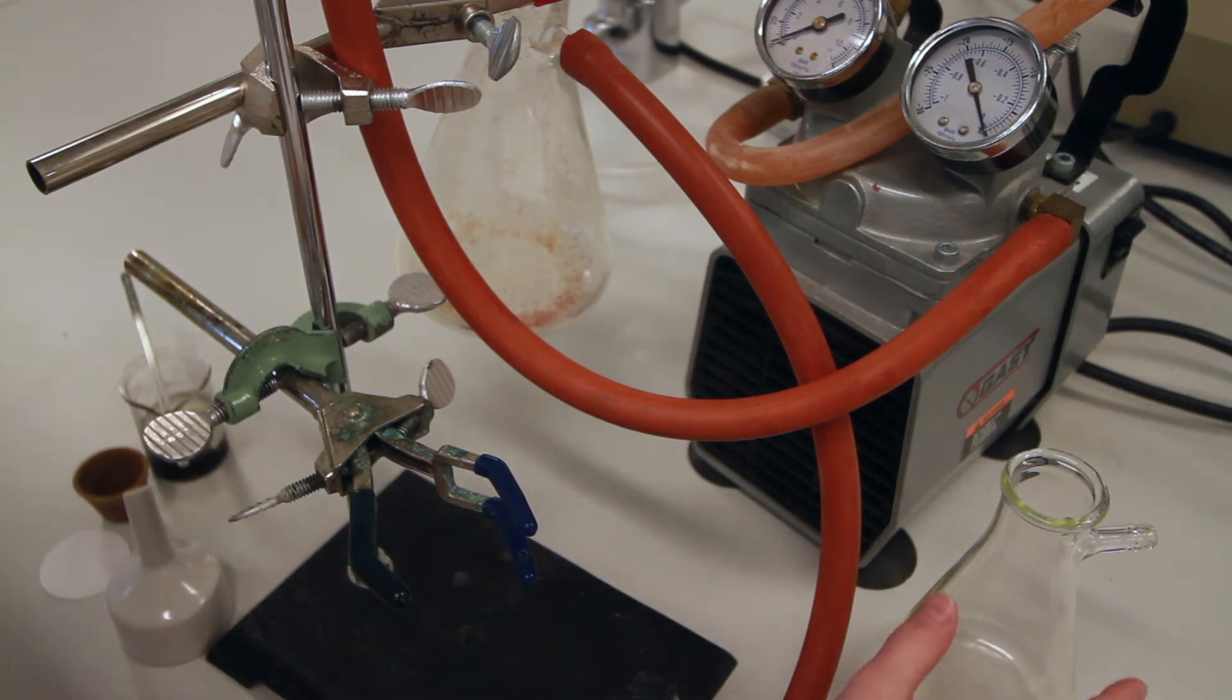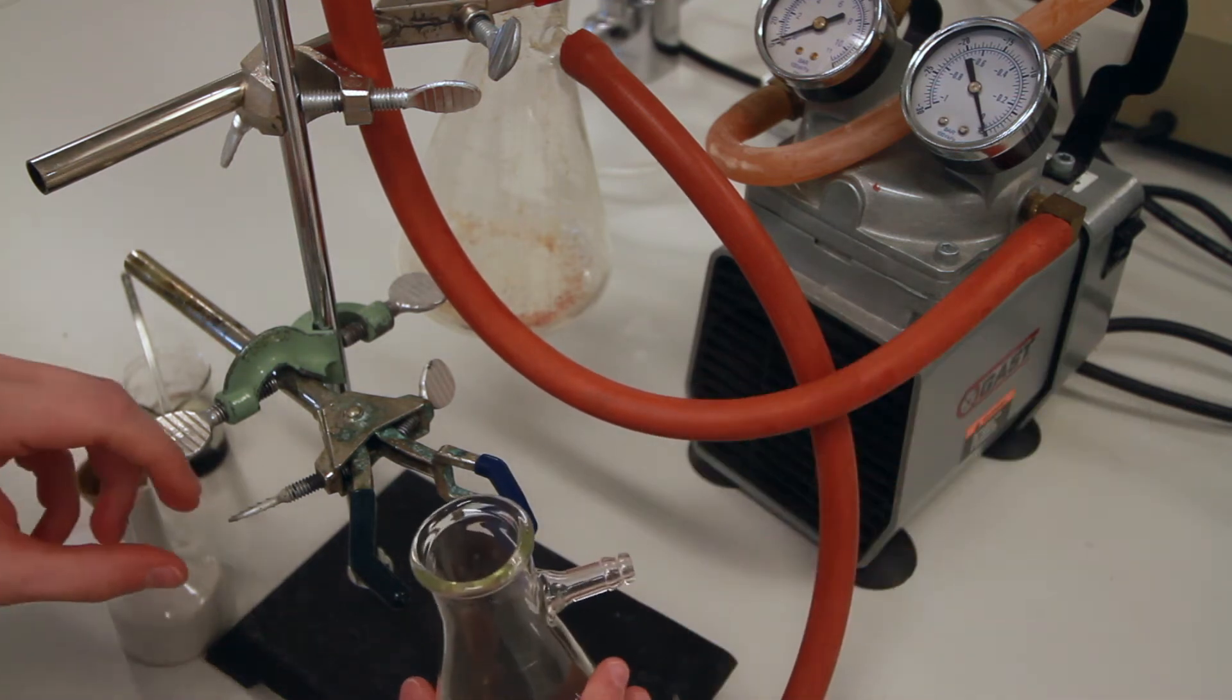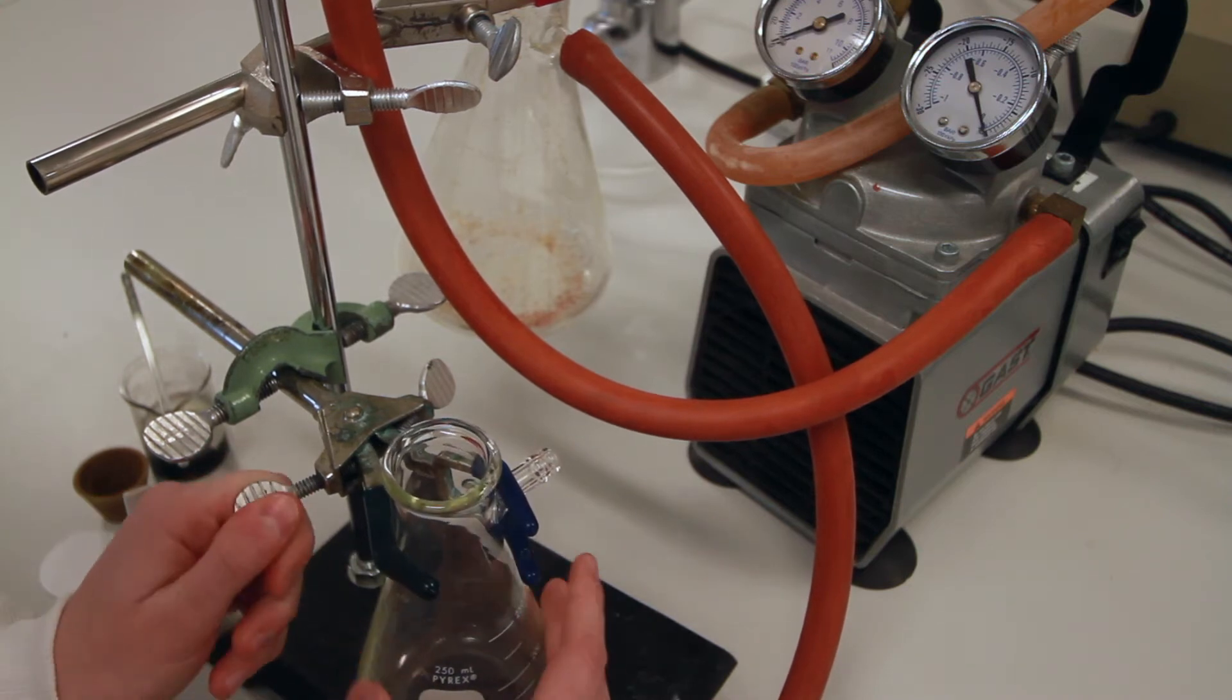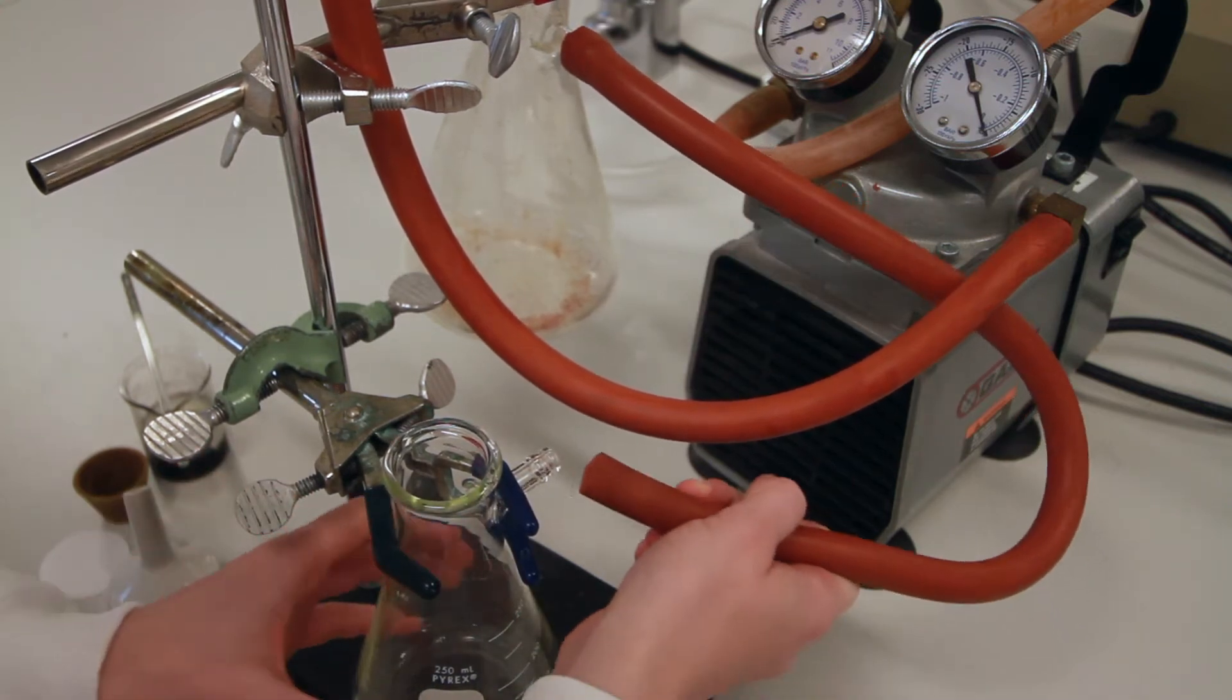To do a vacuum filtration, first start by getting your filter flask. Clamp it in and attach the rubber tubing to the inlet.